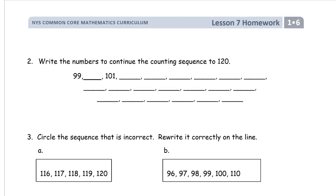Now we're working on more sequencing. Write the numbers to continue the counting sequence to 120. And we've just given two numbers here to tell. So the numbers are getting larger from 99 to 101. And in between 99 and 101, there's only one number that can fit there. 100. So we're counting by ones.